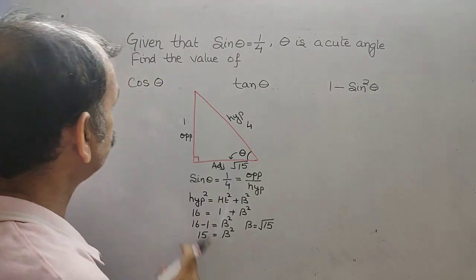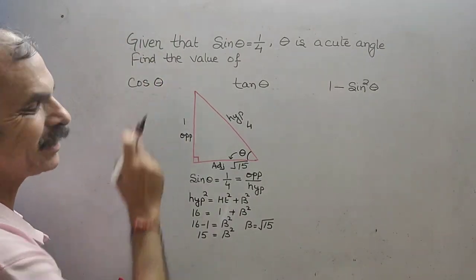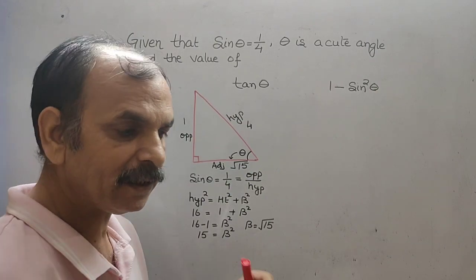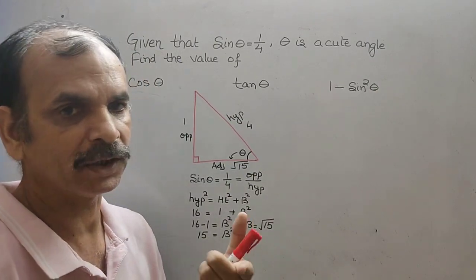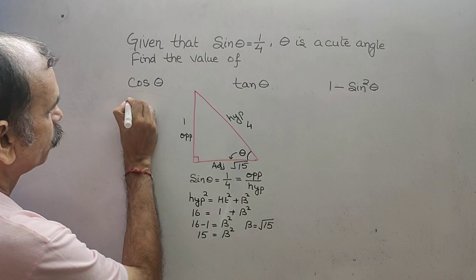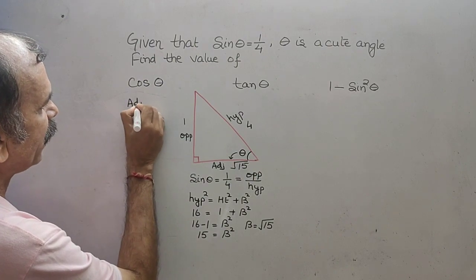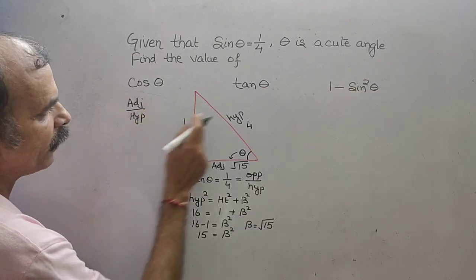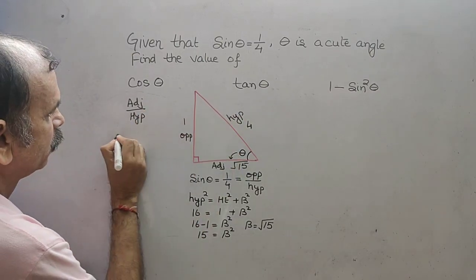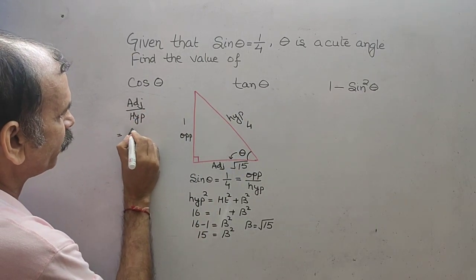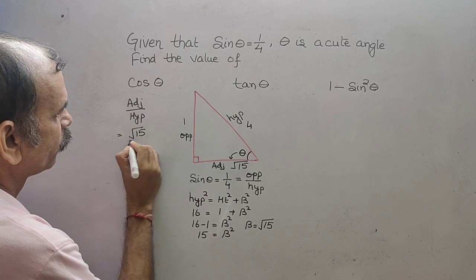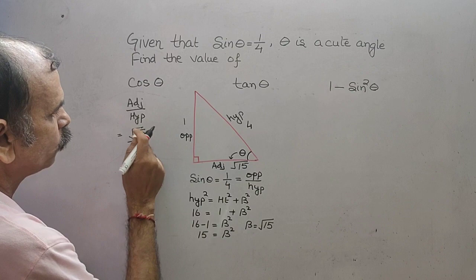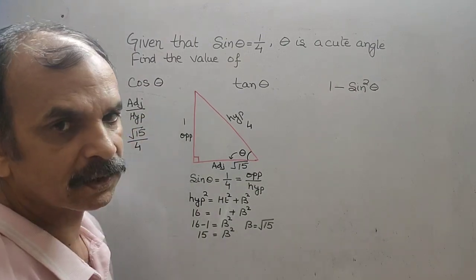Now, cos theta is nothing but adjacent by hypotenuse. Substituting the values, adjacent is root 15 and hypotenuse is 4. So, root 15 by 4 is your answer for cos theta.